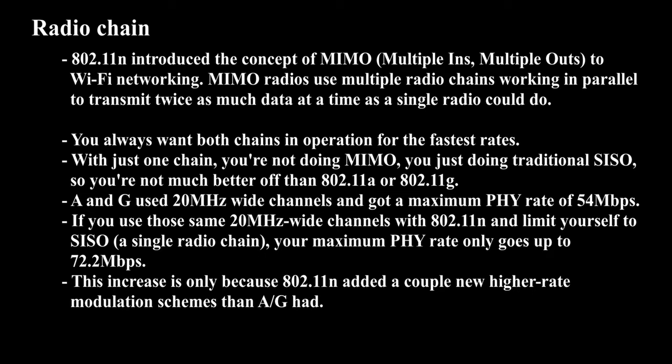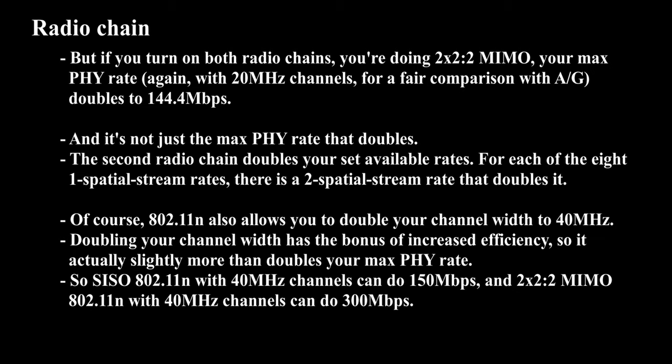A and G used 20 MHz wide channels and got a maximum PHY rate of 54 Mbps. If you use those same 20 MHz wide channels with 802.11n and limit yourself to SISO, your maximum PHY rate only goes up to 72.2 Mbps. This increase is only because 802.11n added a couple of new higher-rate modulation schemes than A or G had. But if you turn on both radio chains, you're doing 2×2:2 MIMO, and your max PHY rate doubles to 144.4 Mbps. It's not just the max PHY rate that doubles — the second radio chain doubles your set of available rates.